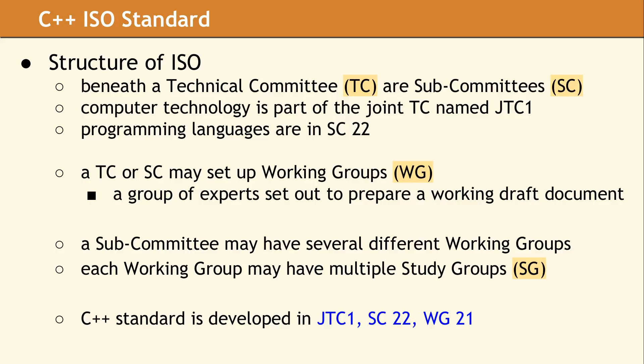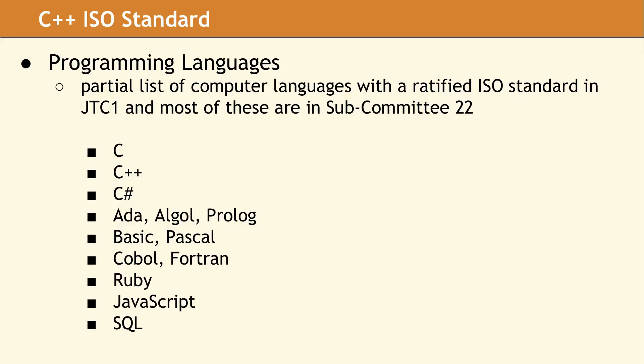Most programming languages are part of Subcommittee 22. This subcommittee designated a working group called WG21 for the sole purpose of developing the C++ standard. There are currently 22 computer languages which have a ratified or published ISO standard.